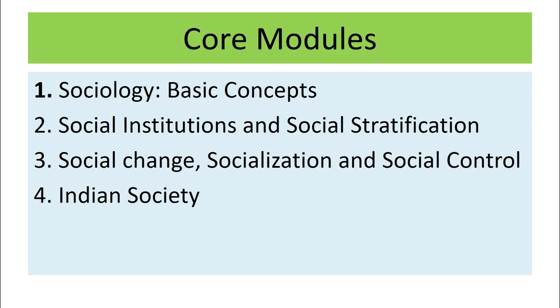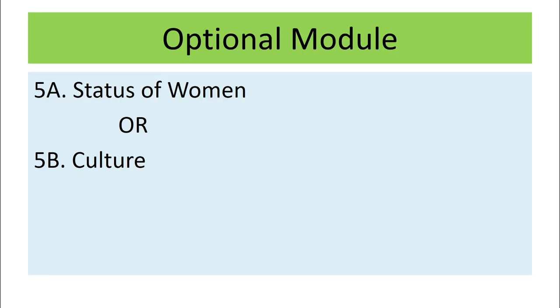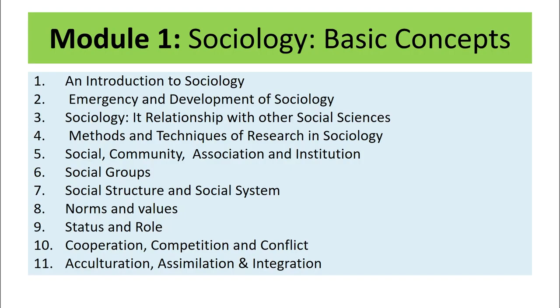The curriculum has four core modules and one optional module. The core modules are: module one — Sociology Basic Concepts; module two — Social Institution and Social Stratification; module three — Social Change, Socialization and Social Control; and module four — Indian Society. The optional modules are Status of Women or Culture, and learners have to choose any one of these two optional modules.